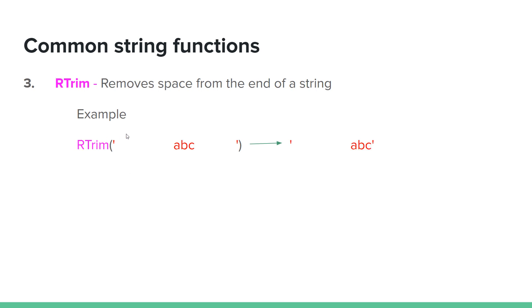The RTRIM function removes space from the end of the string. So using RTRIM on a string with trailing spaces will return the string with the right-side spaces removed.